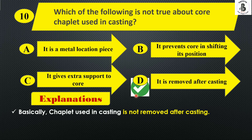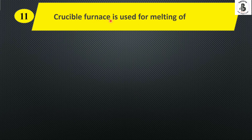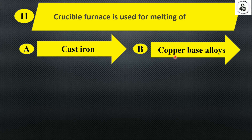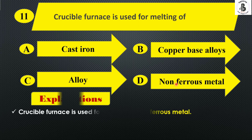Next: a crucible furnace is used for melting of — option A cast iron, option B copper base alloys, option C alloy, and option D non-ferrous metal. Basically, the application of a crucible furnace is for melting non-ferrous metals. So the right answer is option D.